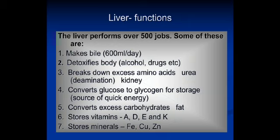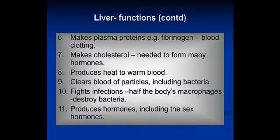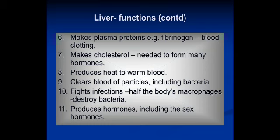The liver stores vitamins A, D, E, and K, and minerals like iron, copper, and zinc. It forms plasma proteins, including fibrinogen which helps in blood clotting, and albumin. It forms cholesterol needed to make hormones, produces heat to warm the blood, and clears blood of particles including bacteria. It fights infections through immunity, with Kupffer cells present in the liver being protective in function. It also produces hormones including sex hormones. Functions are classified as synthetic, immunity, metabolic, detoxification, hormone inactivation, storage of glycogen and vitamin A, and bile secretion.